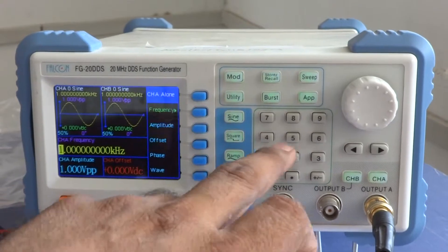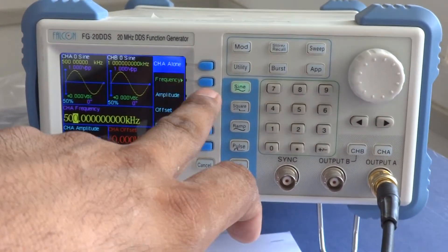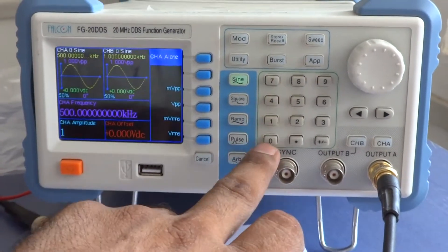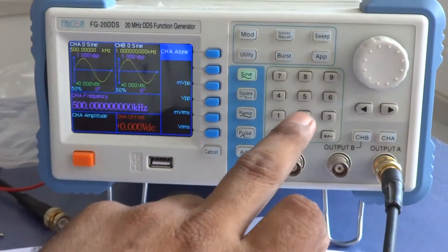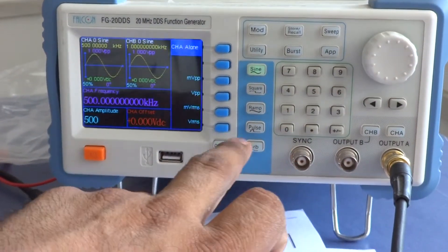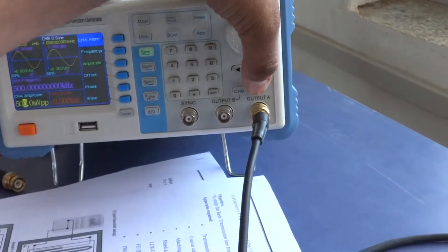Now, frequency 500 KHz. Now, amplitude... 100... no, 500 mW peak-to-peak. Now, press this channel A.